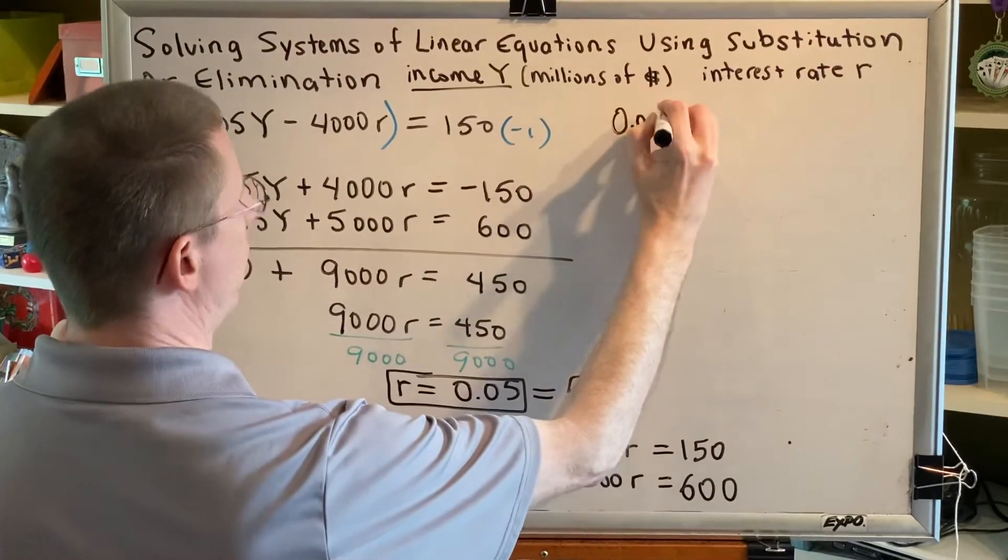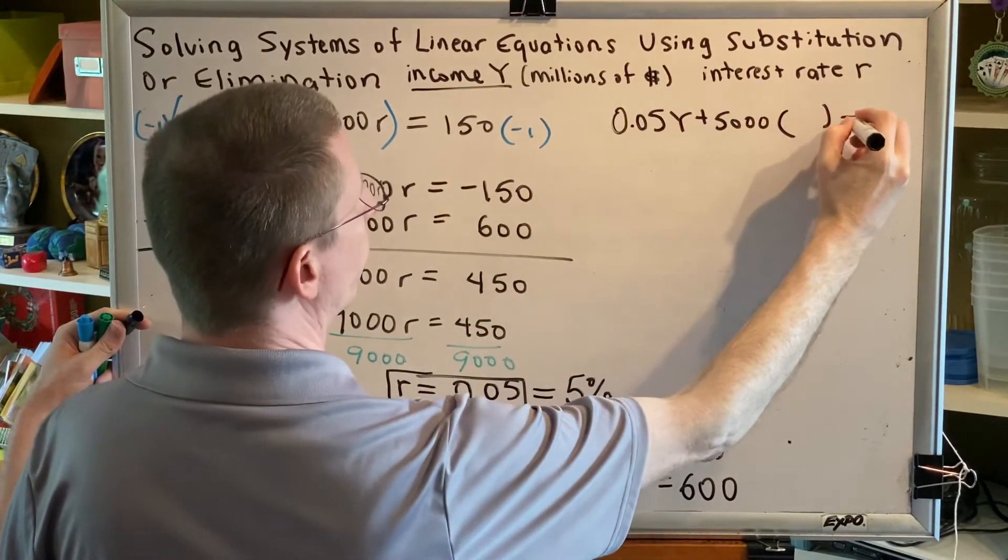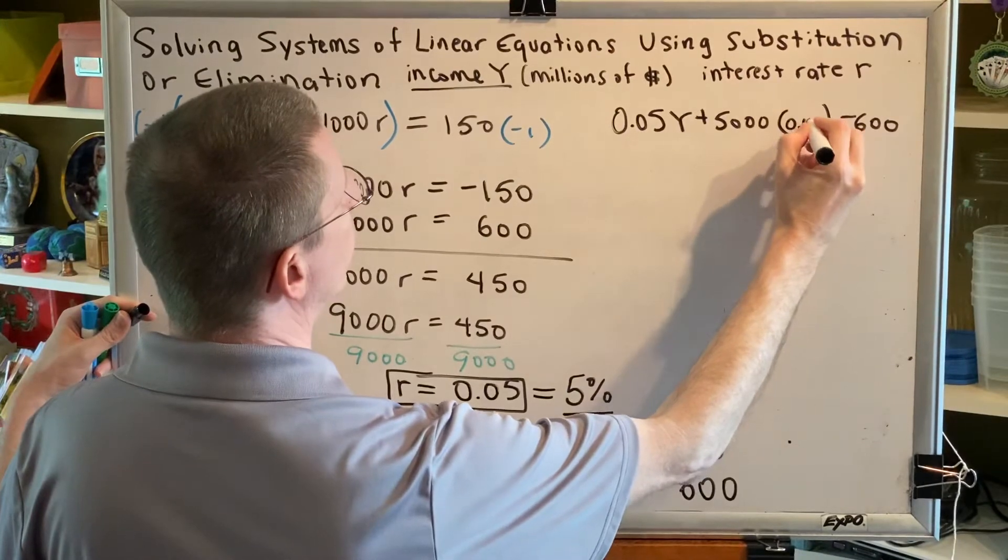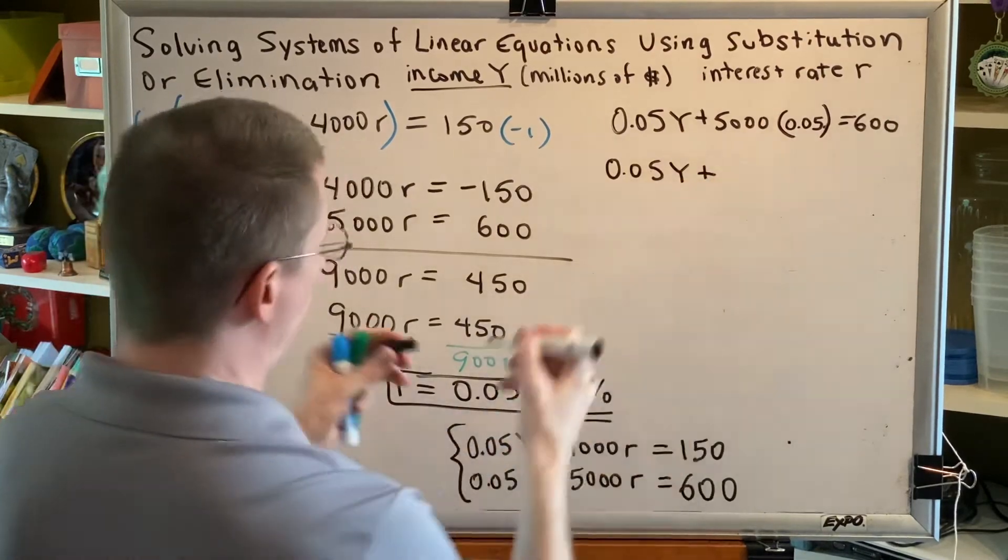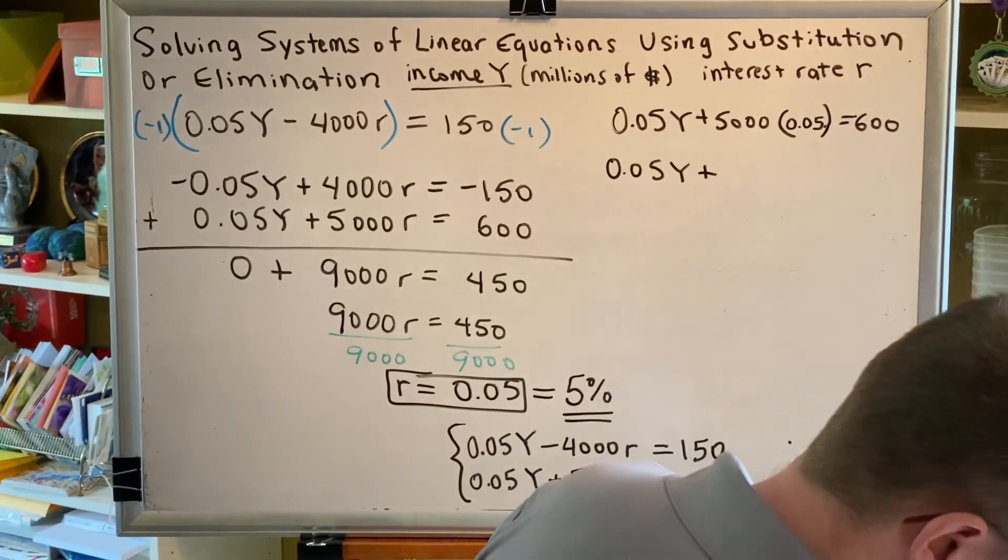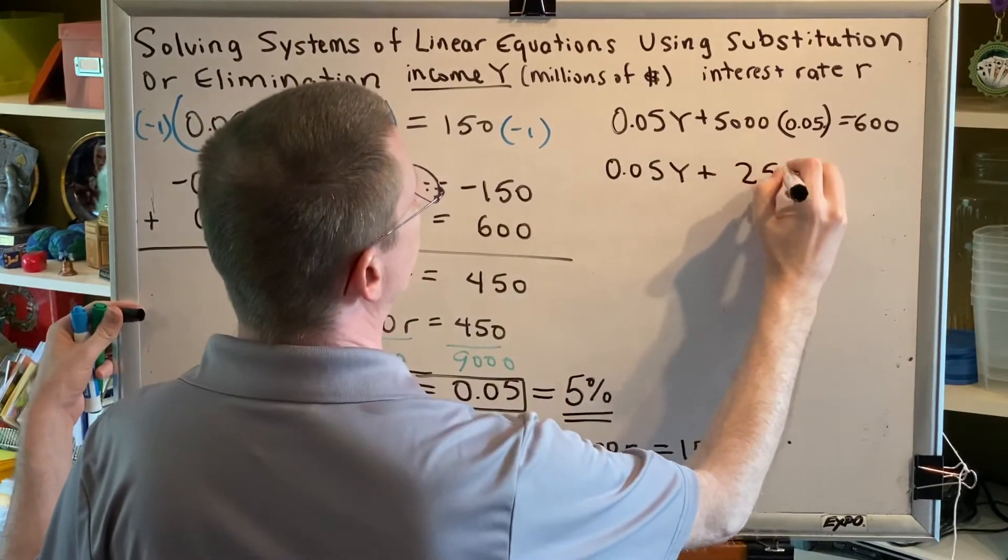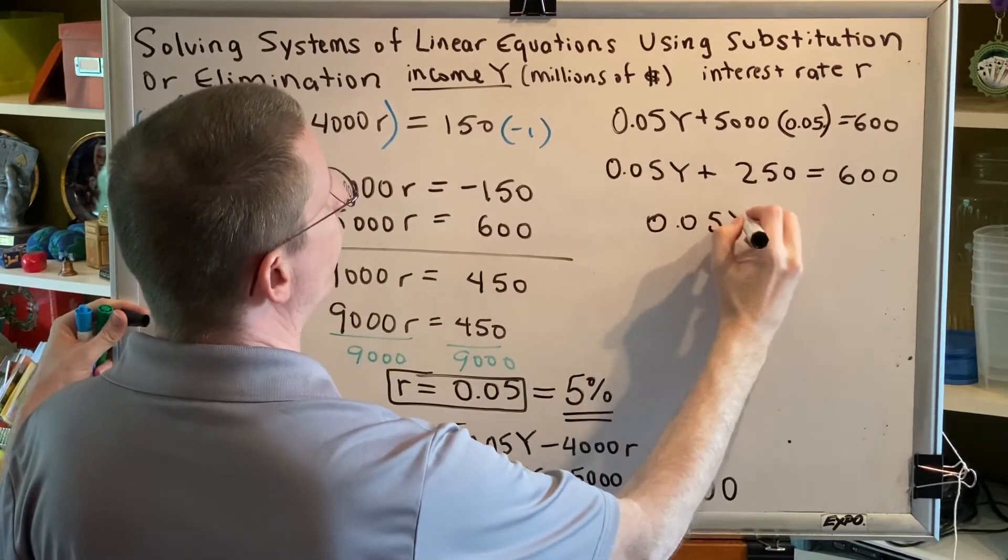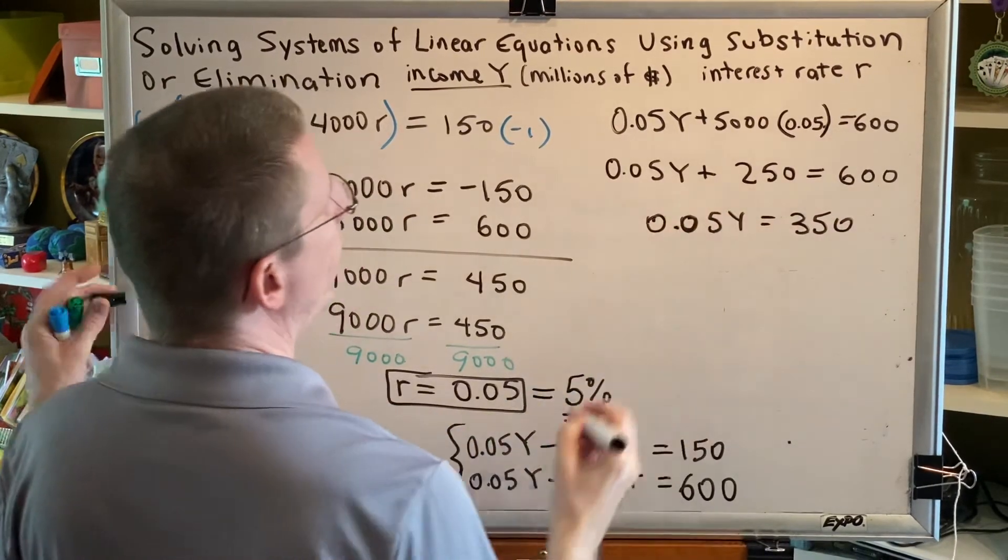So 0.05Y plus 5000R equals 600. We discovered that R is equal to the decimal 0.05. So we get 0.05Y plus, multiplying these values, 5000 times 0.05 gives the value 250, equals 600. Now subtract 250 from both sides. We get 0.05Y equals 350.